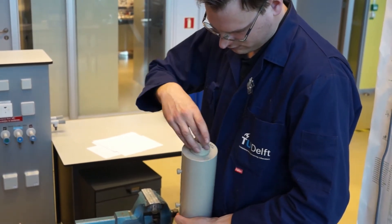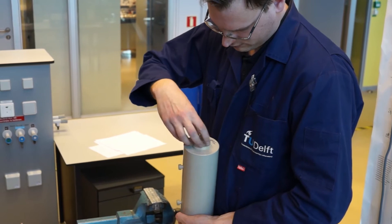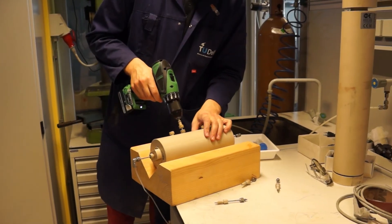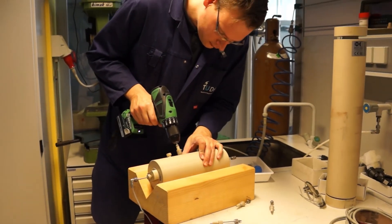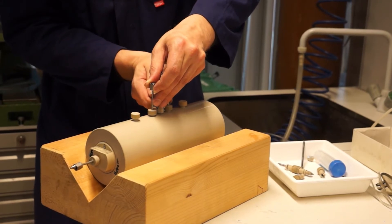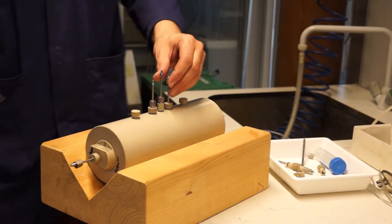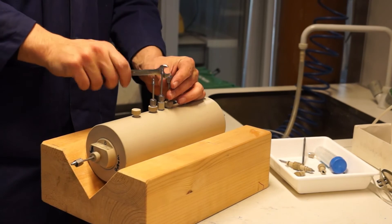We drill into the side of the core holder tabs, which allow us to measure pressure. This is important to make sure that we've obtained the conditions we want and also to see how easily the fluids are flowing, how much pressure they build up as they flow through the core.